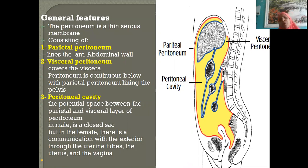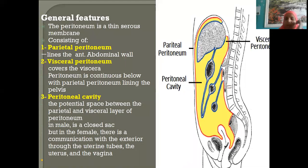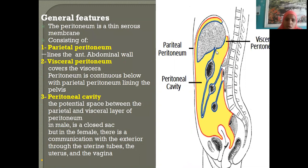Just as with the pleura — where parietal and visceral layers become continuous at the hilum of the lung — here the parietal and visceral peritoneum become continuous. When the peritoneum comes close to the surface of the liver, it reflects onto the liver as the visceral peritoneum.